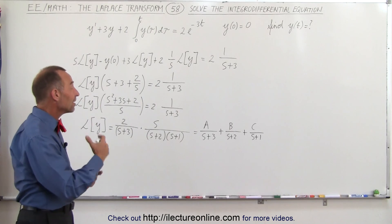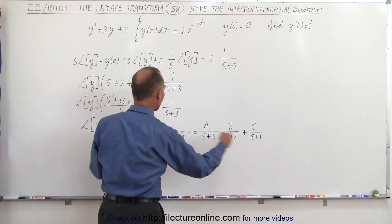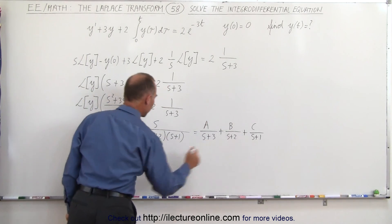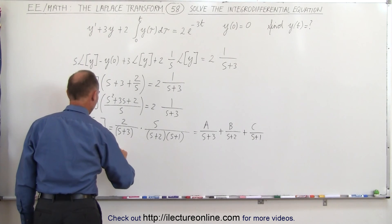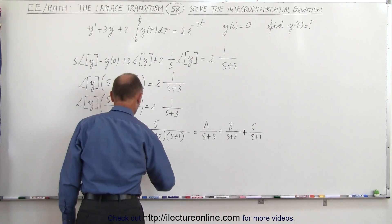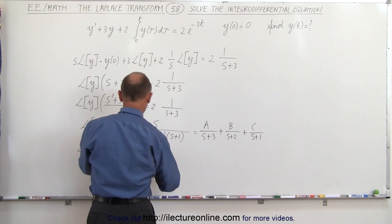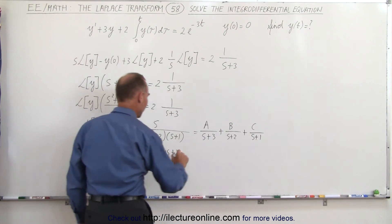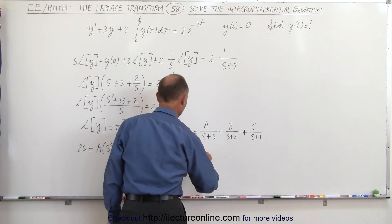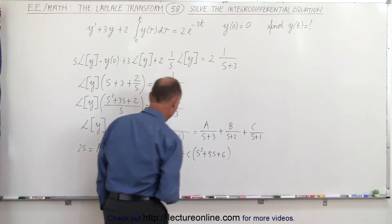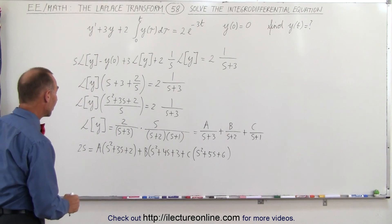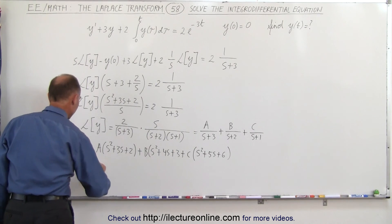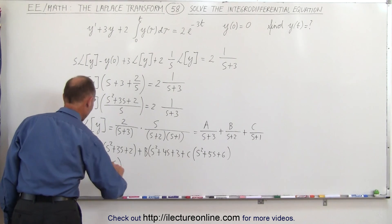Using the method of partial fractions, we multiply both sides by the common denominator, giving 2s equal to A times (s squared plus 3s plus 2) plus B times (s plus 3)(s plus 1), which is s squared plus 4s plus 3, plus C times (s plus 3)(s plus 2), which gives s squared plus 5s plus 6.